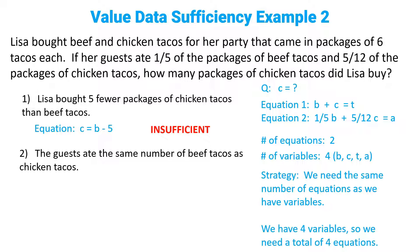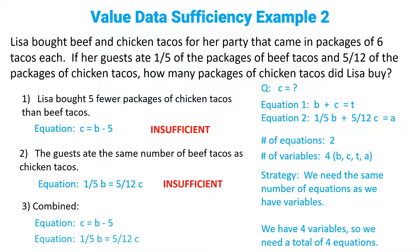Let's take a look at statement two: the guests ate the same number of beef tacos as chicken tacos. What does that mean in math? That means one fifth B equals five twelfths C. We said we needed two more equations, but statement two only gives us one more equation, so statement two is also insufficient. But if we combine both statements, now we get the two equations we need — so that is sufficient.